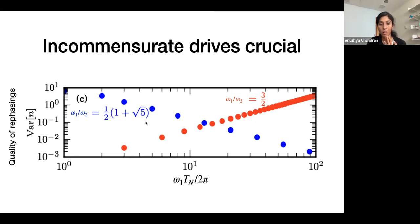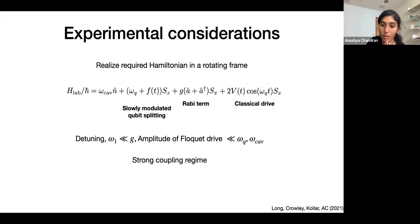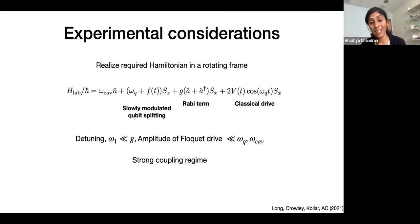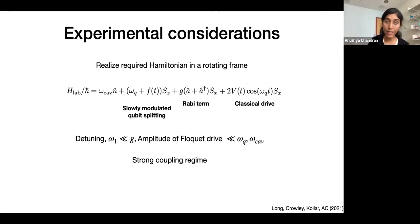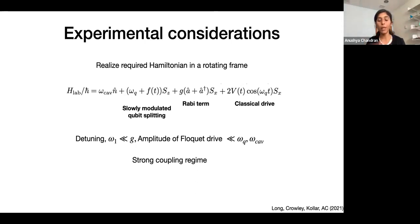Another question regarding the experimental realization: what would be measured — the transmission through the cavity? There are several things that could be measured. What we want to measure most simply would be the number of photons in the cavity as a function of time. The way they're setting this up is they have a readout cavity to do the measuring and a boost cavity to hold the photons. When you run this and increase the photon number in the boost cavity, that will change the qubit frequencies, and the readout cavity detects that.